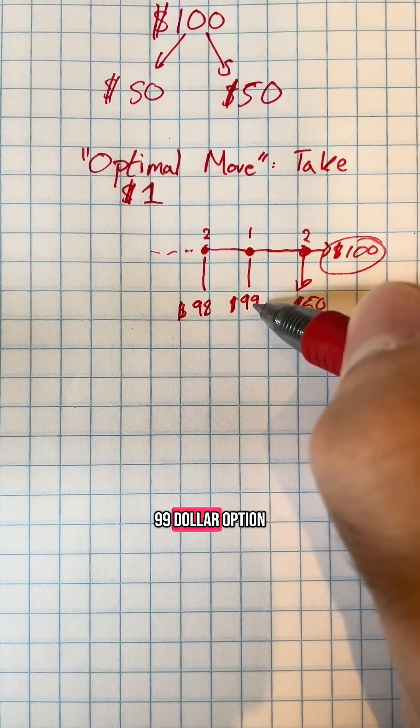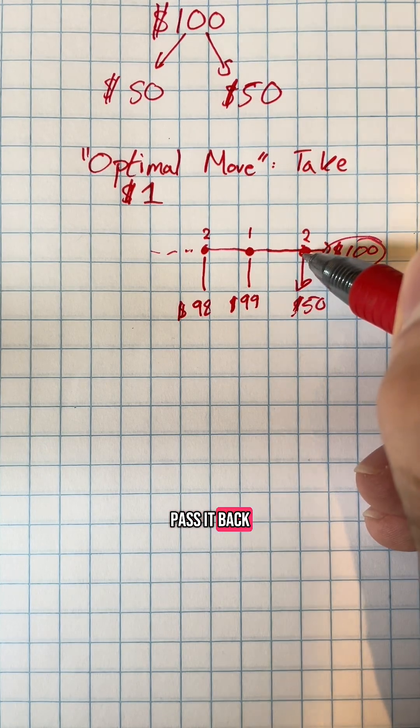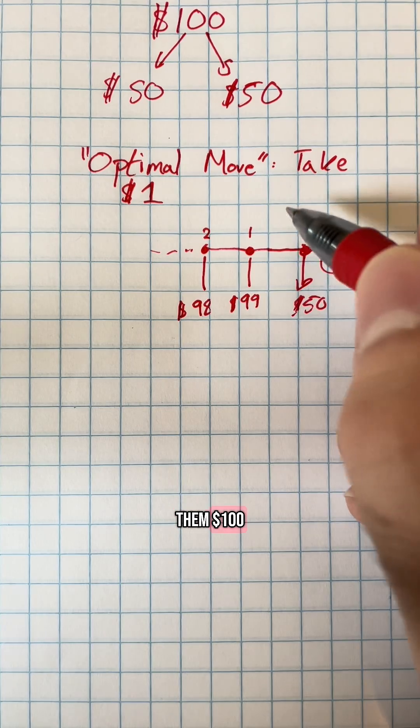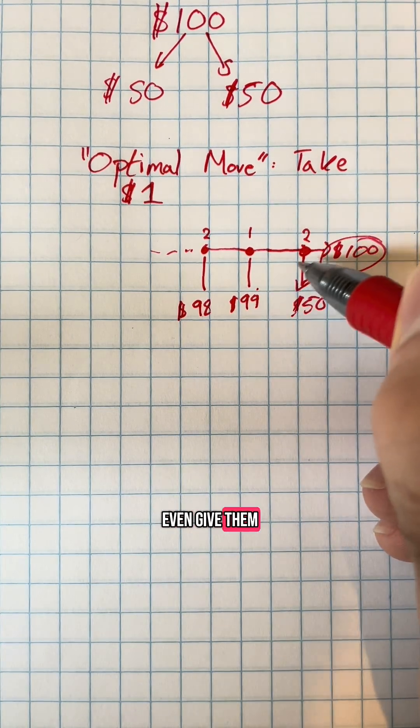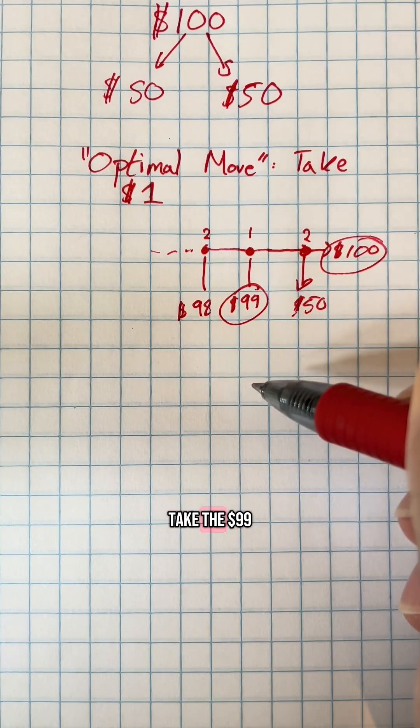So if you got to the ninety-nine dollar option and you had the chance to pass it back to player two, you would just know that player two would take the hundred dollars. So you wouldn't even give them that option. Therefore, you would take the ninety-nine dollars.